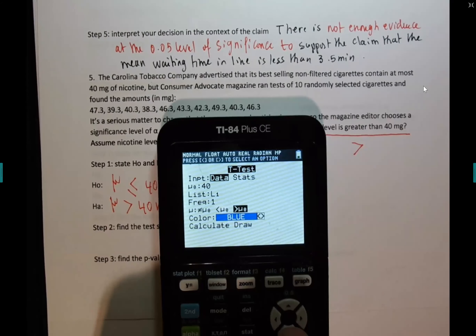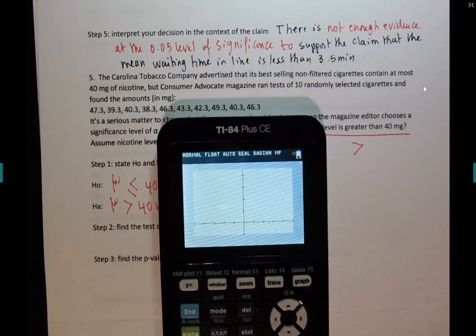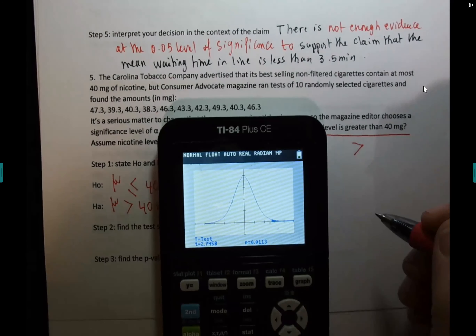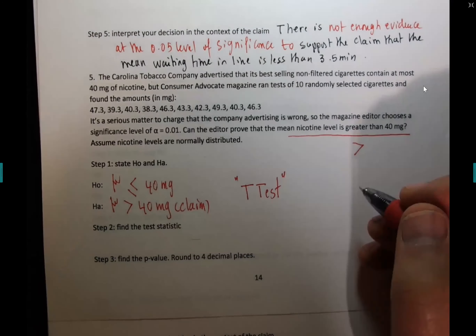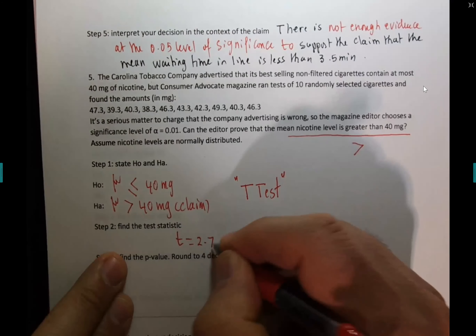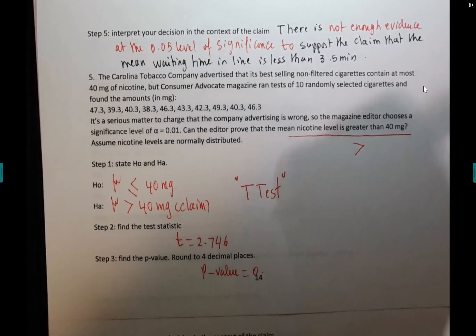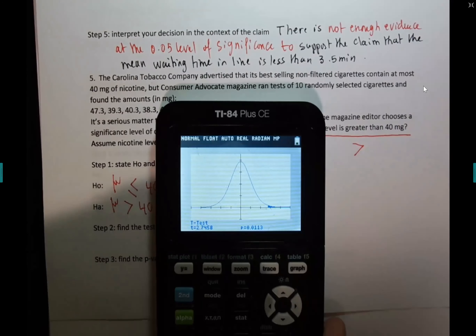You can calculate or draw — your preference. Let me show you the p-value in action. It's small — p-value low, H0 must go — but it's not very very small. t is 2.746 and the p-value is 0.0113.